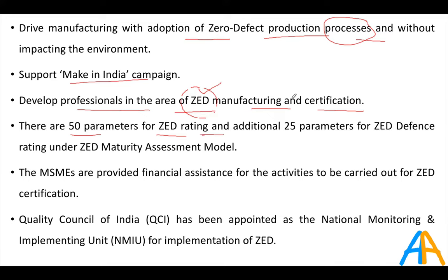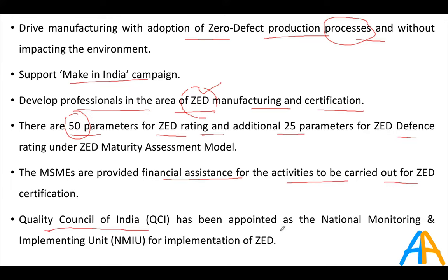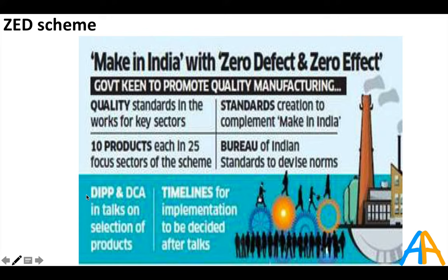There are currently 50 parameters for a ZED rating. A company producing products must pass all 50 parameters, plus 25 additional parameters for the defense sector. MSMEs are provided financial assistance for these activities. The Quality Council of India has been appointed as the nodal monitoring and implementing unit for ZED — distinct from the Bureau of Indian Standards, which devises the norms and procedures.